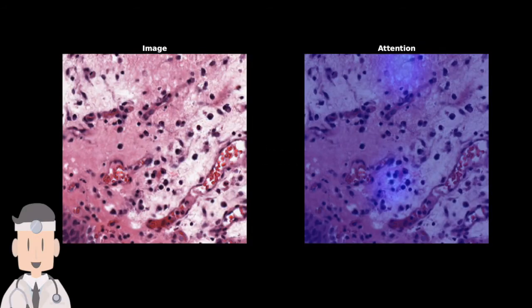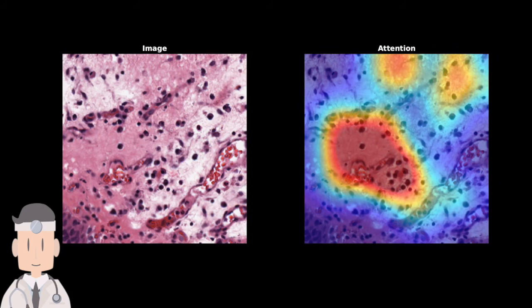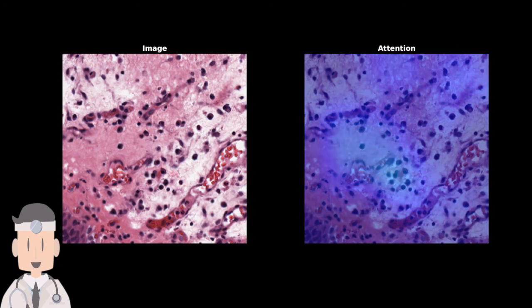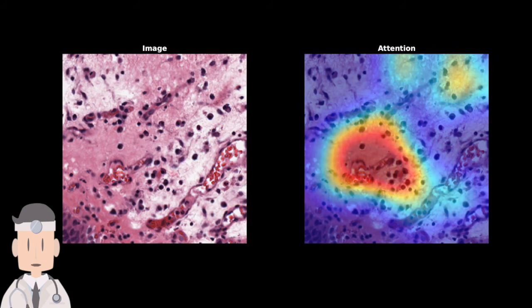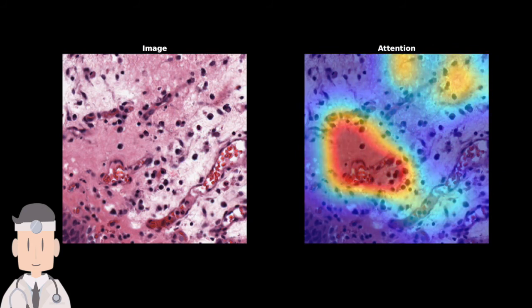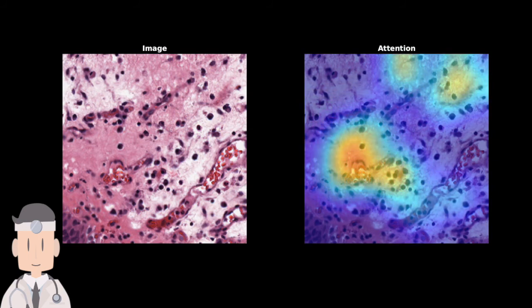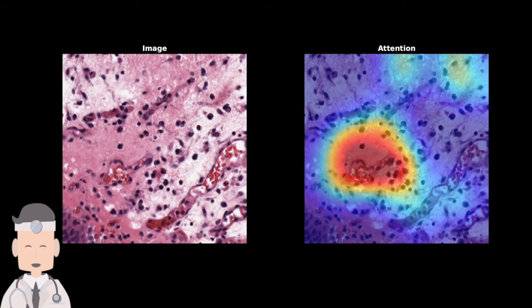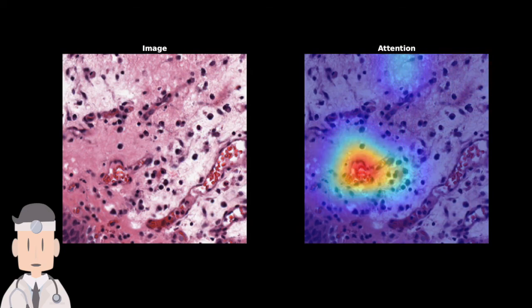The nuclei are unclearly pleomorphic. The nuclei are unclearly crowded. Polarity is indeterminably lost. Mitosis is unclear. The nuclei are mostly indeterminable. Conclusion: Insufficient Information.